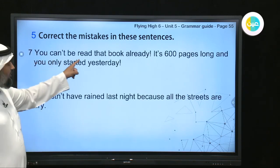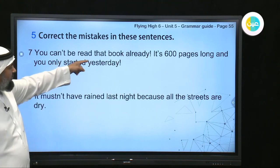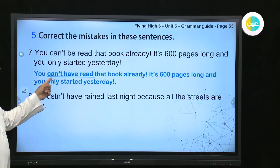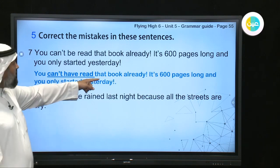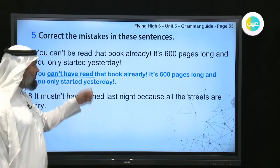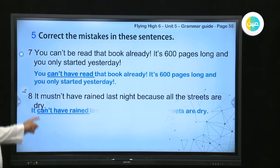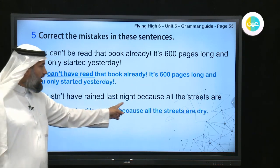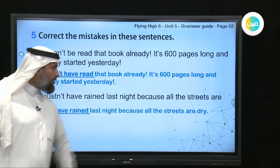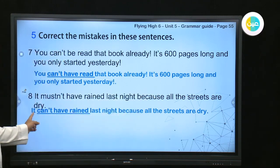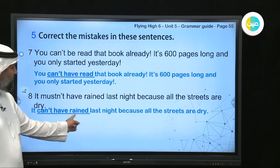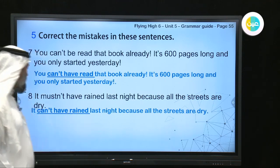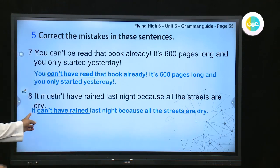Seventh: 'You can't be read that book already.' The correction is: 'You CAN'T HAVE READ that book already.' Eighth: 'It mustn't have rained last night because the streets are dry.' The correction is: 'It CAN'T HAVE rained last night' — not 'mustn't have.'